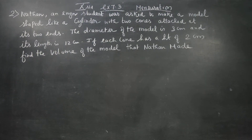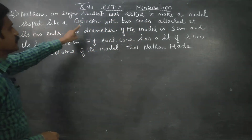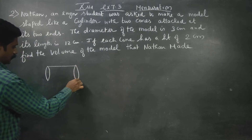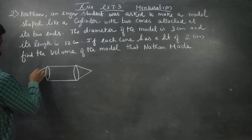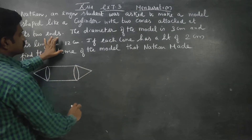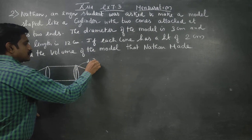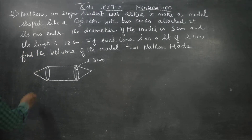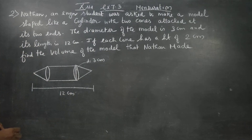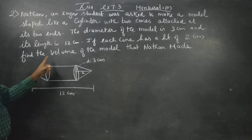Dear 10th standard students, in exercise 7.3, an engineering student was asked to make a model shaped like a cylinder with two cones attached at both ends. The diameter of the model is 3 centimeters and its total length is 12 centimeters. If each cone has a height of 2 centimeters, find the volume of the model.